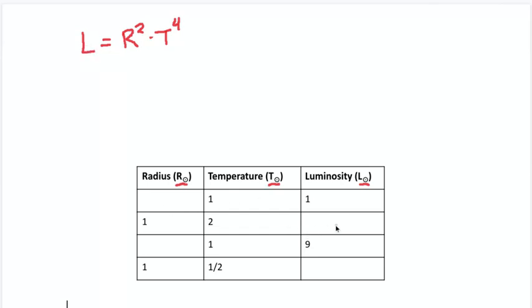You'll see that there's blanks in the table, and we're going to need to solve for luminosity in a couple of cases and solve for radius in a couple of cases. I'm going to rearrange this equation to solve for radius, which would be that the radius equals the square root of luminosity divided by temperature to the fourth. So that's two different versions of the same equation, one solving for luminosity, one solving for radius. Let's use those to fill out the rest of this table.